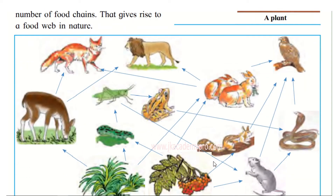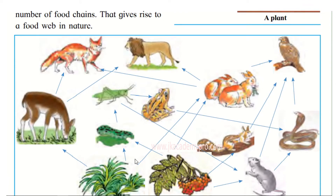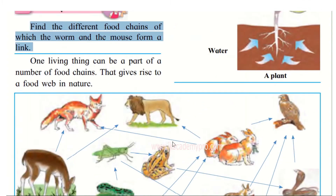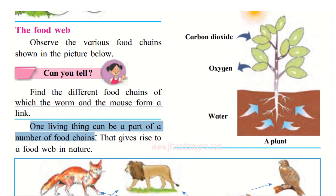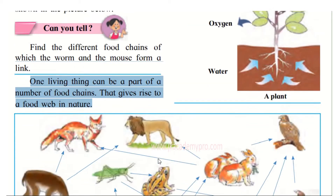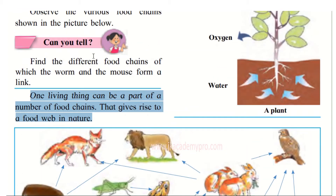Look at where the worm is and where the mouse is. Follow the connections and note them down. One living thing can be part of a number of food chains, and that gives rise to the food web in nature. There are many interdependent animals — do answer this question.